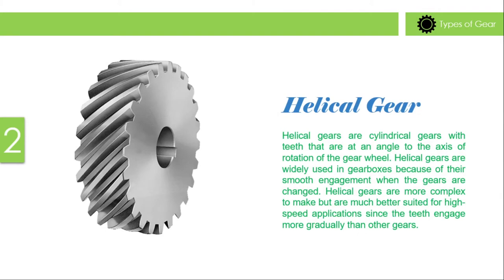Helical gear: Helical gears are cylindrical gears with teeth that are at an angle to the axis of rotation of the gear wheel. Helical gears are widely used in gearboxes because of their smooth engagement when the gears are changed. Helical gears are more complex to make but are much better suited for high-speed applications, since the teeth engage more gradually than other gears.